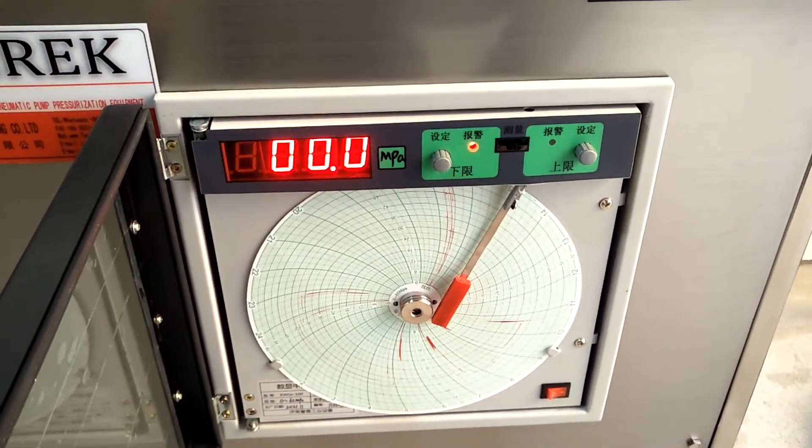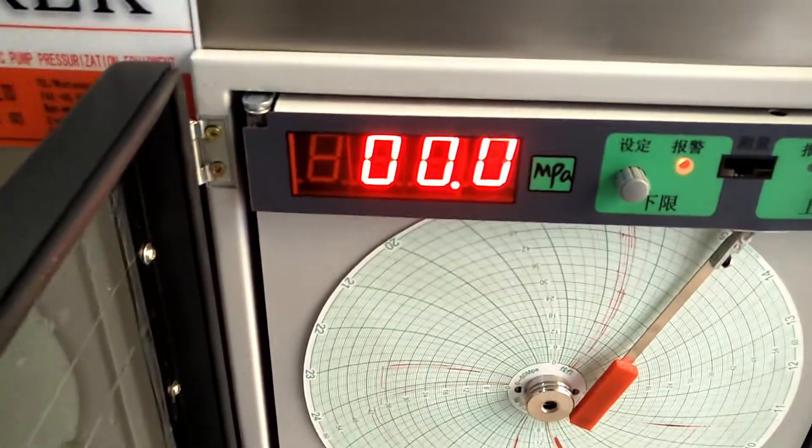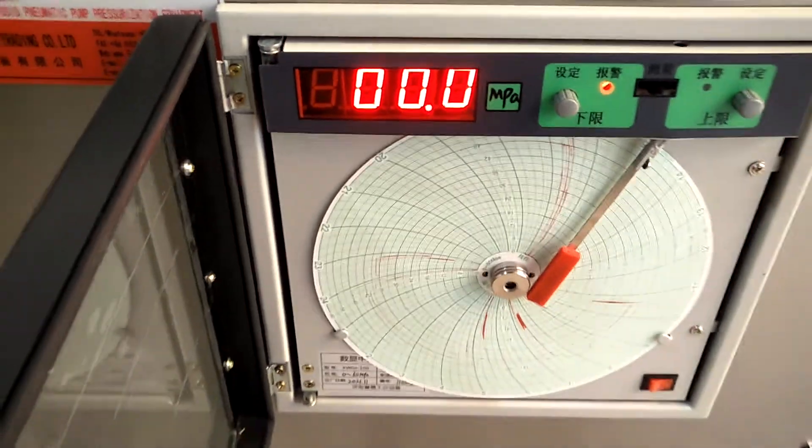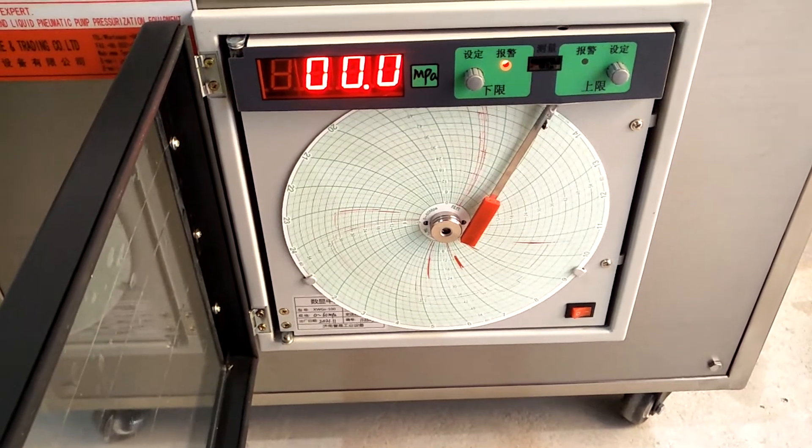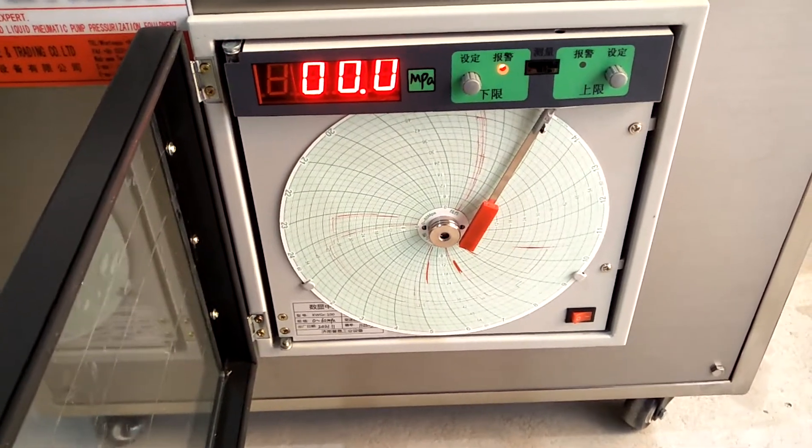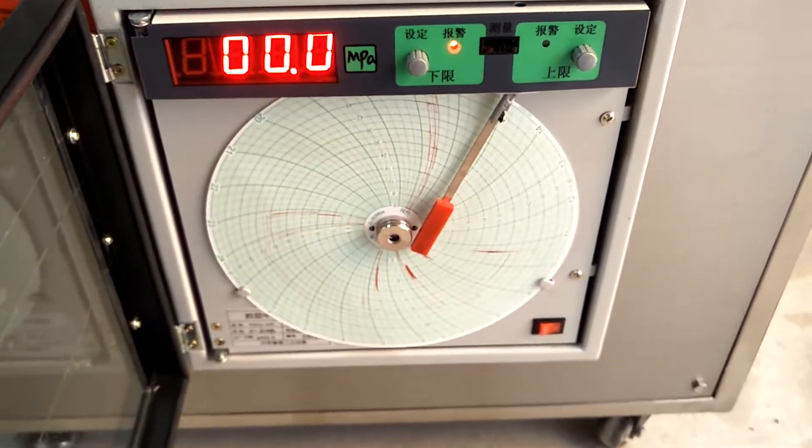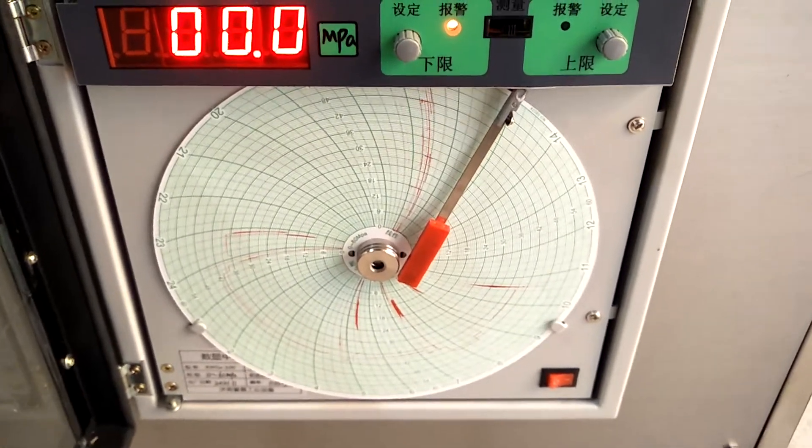The indicator lights up and the recorder will automatically rotate the chart and print the corresponding output pressure on the chart.